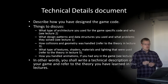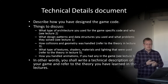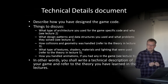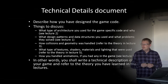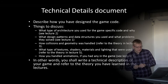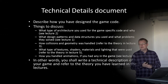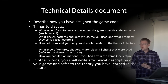The final submission is the technical details document where you describe how you designed the game code. Things you can discuss are: what type of architecture you used and why (covered in lecture two), what design patterns and data structures you used and what problems they solved, how collisions and geometry were handled (lecture three), what type of textures, shaders, materials, and lighting you used (lecture five), and how you handled animations if you had any. You should write a technical description of your game and refer to the theory from the lectures.